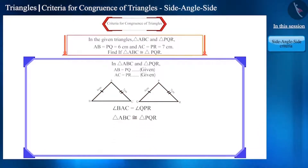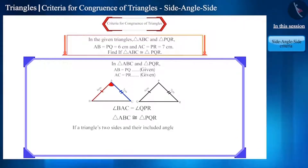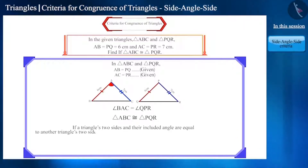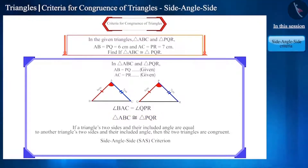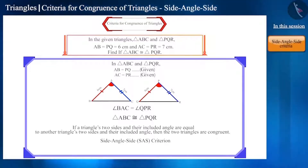That is, if a triangle's two sides and their included angle are equal to another triangle's two sides and their included angle, then the two triangles are congruent. This is called side-angle-side or SAS criterion.